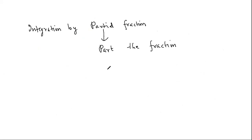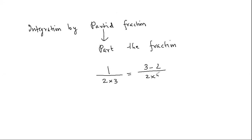Just to give an example: 1 upon 2 into 3, that is 1 upon 6. But I can write 1 upon 2 into 3 — the numerator 1 can be written as 3 minus 2 upon 2 into 3. When you separate this, 3 upon 2 into 3 gives 1 by 2, and 2 upon 2 into 3 gives 1 by 3. So 1 upon 2 into 3 equals 1 by 2 minus 1 by 3. I split the fraction.